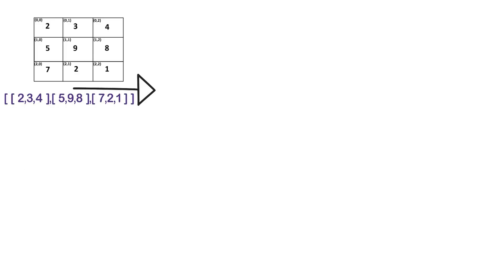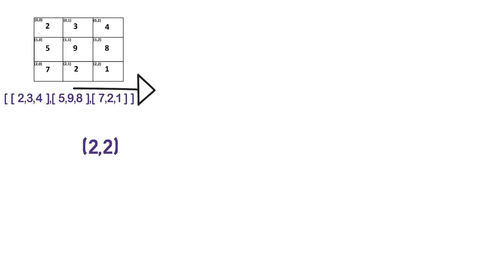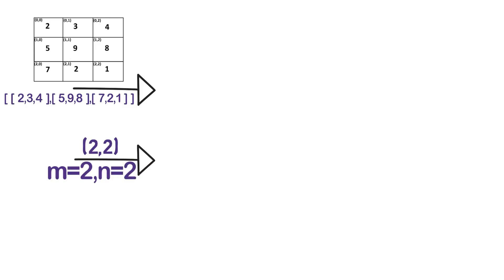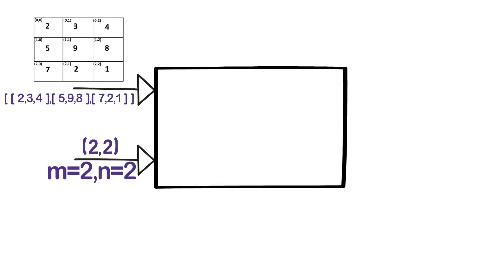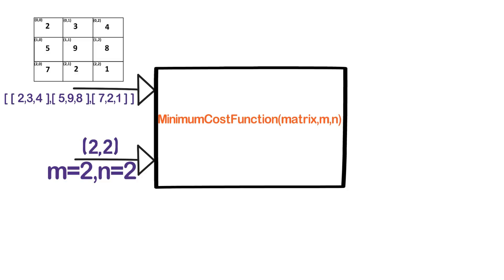Now that the problem is clear, let me define it formally. We pass a matrix and an index — for example 2,2 — to a function. The function should return the minimum cost to reach that cell from the first cell, 0,0. You can pause this video and think of a way to solve it before continuing.